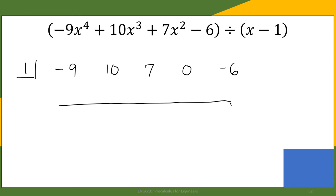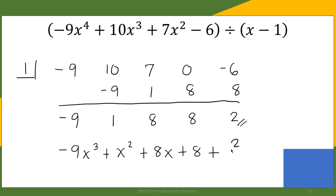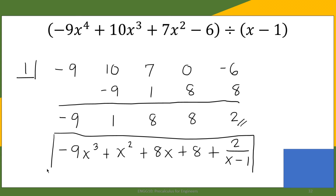We perform synthetic division: bring down negative 9, multiply to get negative 9, add to get positive 1, multiply to get 1, add to get 8, multiply to get 8, add to get 8, multiply to get 8, add to get 2. The remainder is 2. The quotient is one degree less than the dividend, so we have negative 9x cubed plus x squared plus 8x plus 8, plus the remainder 2 divided by x minus 1.